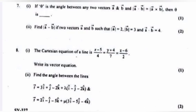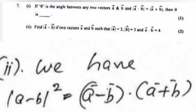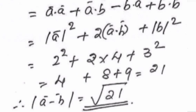Find |a − b| if two vectors a and b are such that |a| = 2, |b| = 3, and a · b = 4. Answer: |a − b|² = a · a − 2(a · b) + b · b = |a|² − 2(a · b) + |b|² = 4 − 8 + 9 = 5. Wait — = 4 + 8 + 9 = 21. Therefore |a − b| = √21.